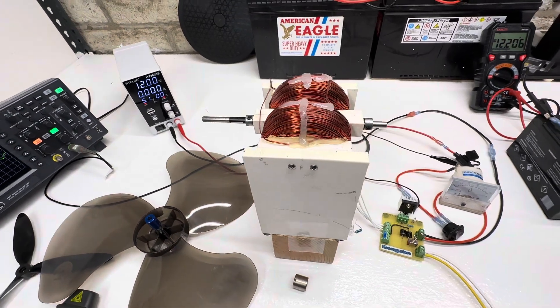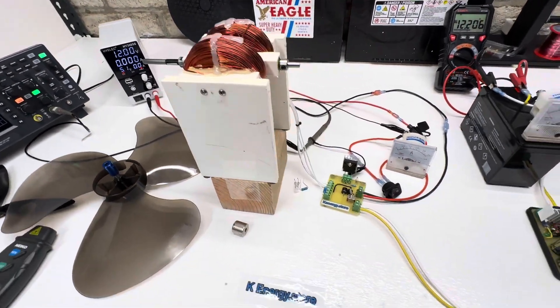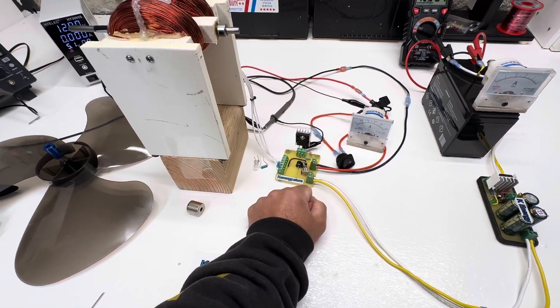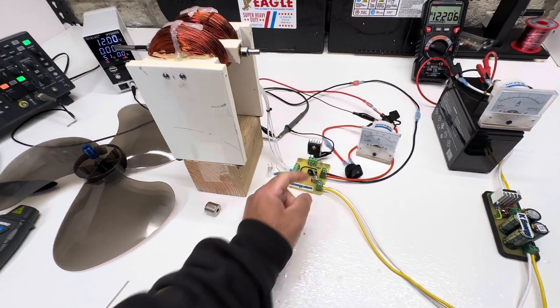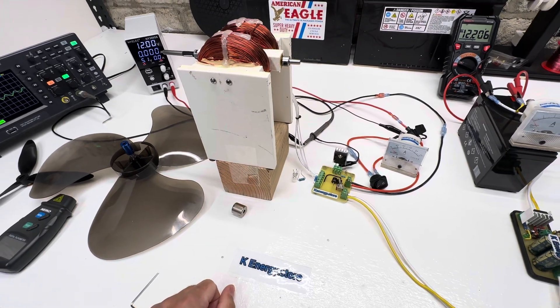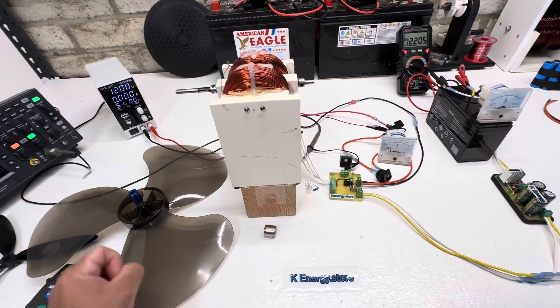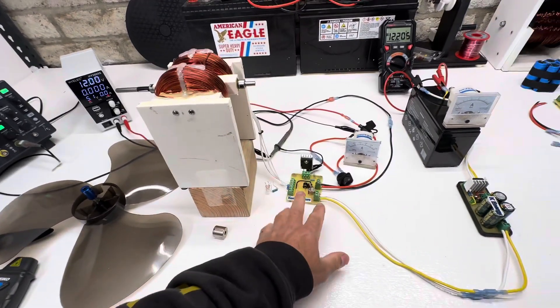This is my typical Bedini circuit with the switch for SG mode or generator mode. I just wanted to do a video about the different loads, how it goes with the circuit, with the output and the input and the speeds.